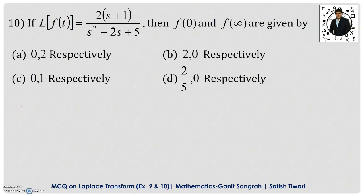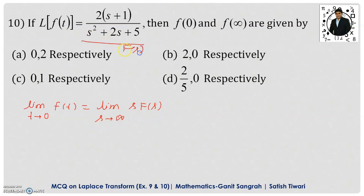The initial value theorem for the Laplace transform states: limit as t → 0 of f(t) equals limit as s → ∞ of s · F(s). The function F(s) is already given, so multiplying F(s) by s and taking the limit as s → ∞, there is no need to find f(t) explicitly — we can use F(s) directly to get f(0).